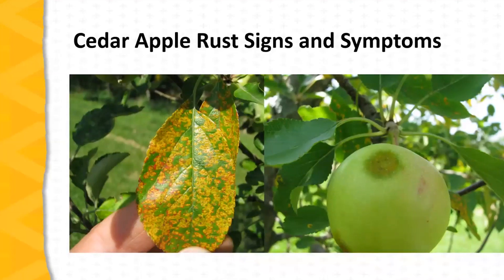On the apple or crab apple, what we most notice are lesions on the leaves that are orange or yellow in color. The picture shows the upper surface of the leaf, and if you flip it over you see a similar color but also raised bumps on the underside. Occasionally we see it on the fruit as well — the lesion is typically darker in color than the fruit itself, and you can see those same raised bumps on the fruit.